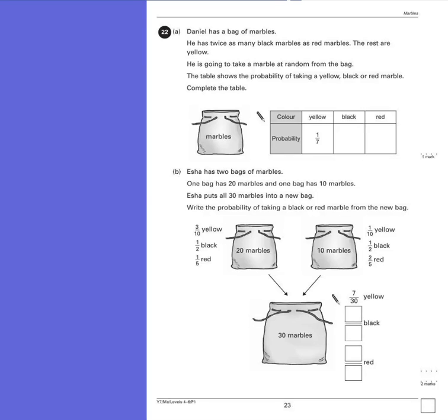Question 22, Part A. Daniel has a bag of marbles. Here's some facts about them. He has twice as many black marbles as red marbles. The rest are all yellow. He's going to take a marble at random from the bag. The table shows the probability of taking a yellow, black or red marble. Complete the table.